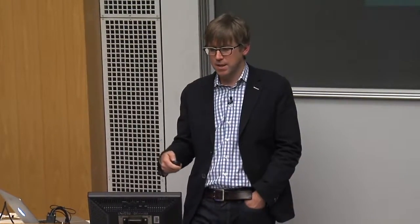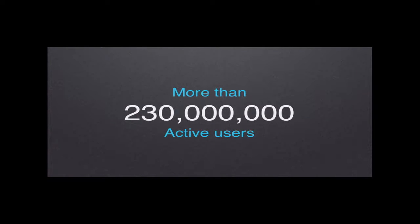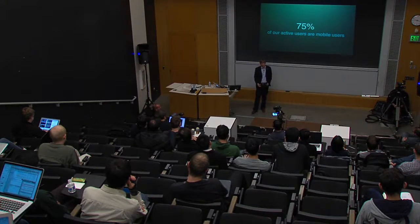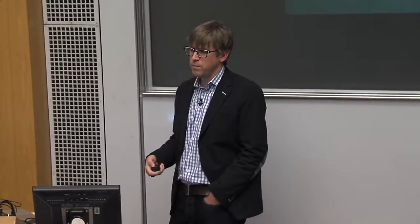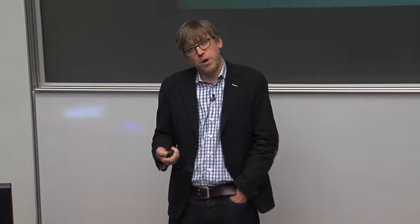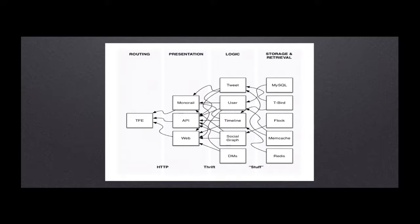Coming to the present: right now we process about 500 million tweets a day. We have about 230 million active users. 75% of our active users are actually on mobile, which means they hit our API as opposed to rendering web pages — which I think is one of the highest for any social media company. It's partly because of our 140-character limit and why we've seen good penetration in international communities with high-end or low-end phones. And 77% of the accounts are actually outside the United States.